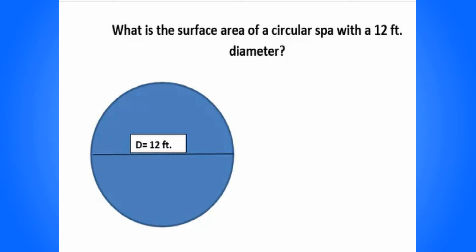So let's go ahead and read the problem. What is the surface area of a circular spa with a 12-foot diameter? And you can see that there's a picture below showing you like you're looking down on the spa, and that line completely across is that diameter of 12 feet.